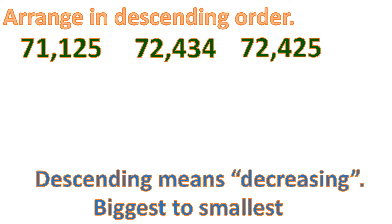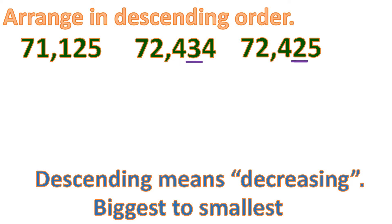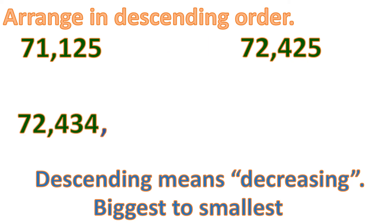So we're going to find the biggest number, and then it keeps on decreasing. Starting from the biggest place value, the 10,000th place, they all have 7, so we cannot compare them. Moving to the 1,000th place, we have two 2s and a 1. So the biggest number is either of the two numbers with 72,000. Comparing them at the 100th place, they have the same digit. Moving to the 10s place, we have 3 and 2. So the biggest number among these three is 72,434.